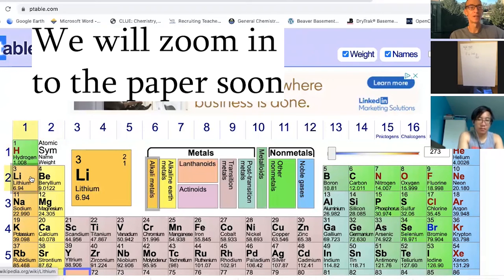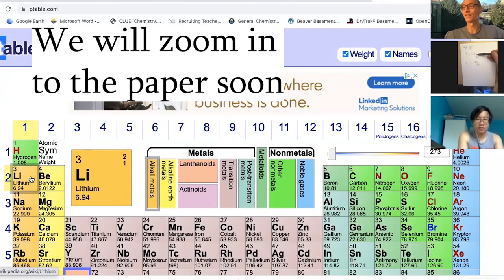And right below it is lithium. And it says the molar mass for lithium is 6.94 grams per mole. And that's the mass, as we were just talking about, of 6.02 times 10 to the 23 atoms of lithium, or this is the mass of 6.02 times 10 to the 23rd atoms of hydrogen.